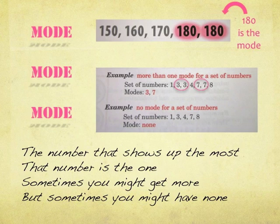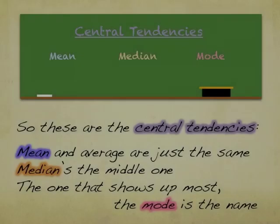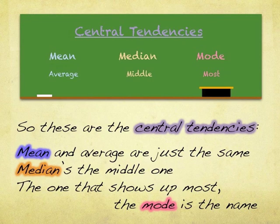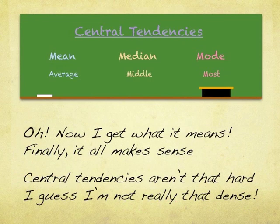The number that shows up the most — that number is the one. Sometimes you might get more, but sometimes you might have none. So these are the central tendencies: mean and average are just the same, median's the middle one, the one that shows up most is the mode — that's the name.